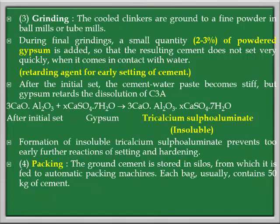The role of gypsum is to enhance the initial setting, which we will see in detail later. The formula for gypsum is CaSO4·2H2O. Finally, we get tricalcium sulfo aluminate. Then packing is done. Each bag usually contains 50 kg of cement.